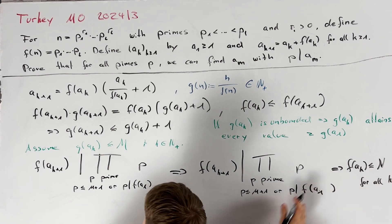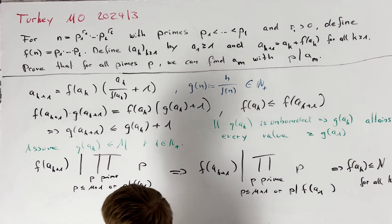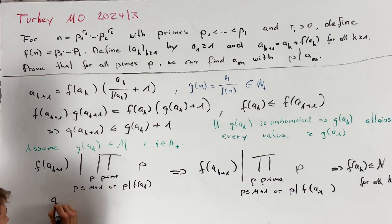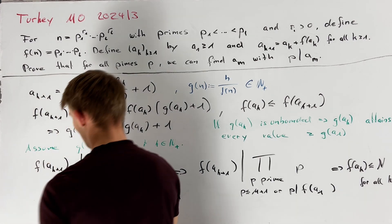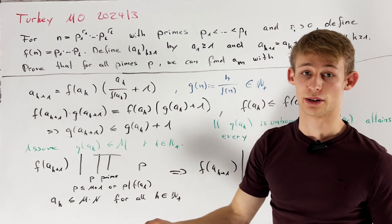This inequality together with g of a_k is less than or equal to m directly implies that a_k is less than or equal to m times n for all integers k. This directly implies that a_k is a bounded sequence.